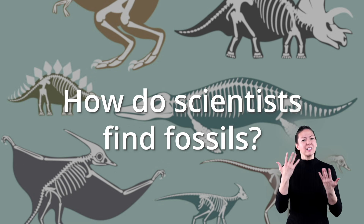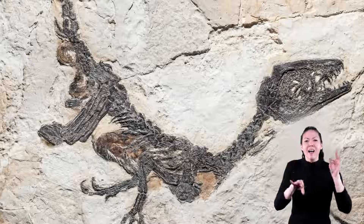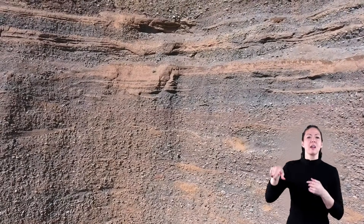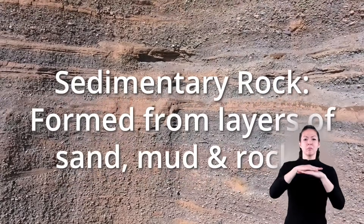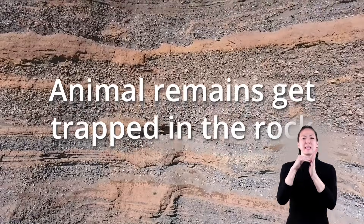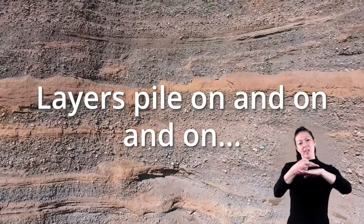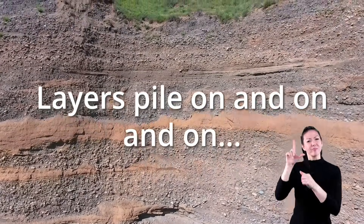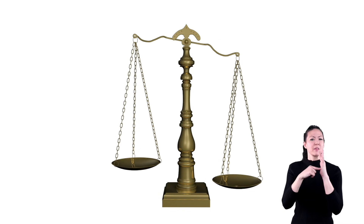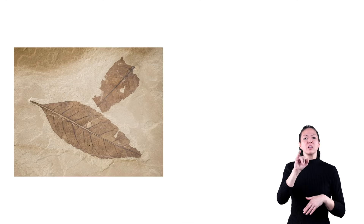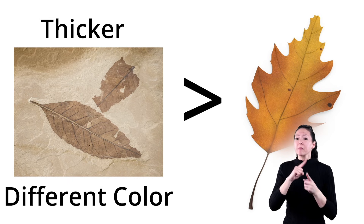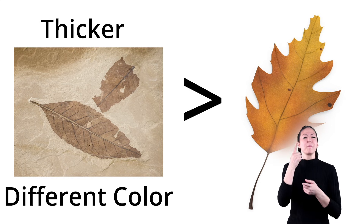So now that you know what fossils are, how do scientists go about finding them? Fossils come in many different colors and take many different forms, depending on where they're found. Most fossils are found in sedimentary rock layers. Sedimentary rock is a type of rock that is formed from layers of sediment, like sand and mud, along with small pieces of larger rock. Over millions of years, remains of animals can get trapped in these layers of rock, and more and more layers pile on top, thus preserving them forever. When a fossil is formed, it becomes heavier than the original organism from which it came — for example, because it's now made from mineral and rock material, a fossil of a leaf will weigh much more than the original leaf itself. While it may have the same shape of the leaf, it can actually be much thicker or be a different color than the original leaf, because hardened minerals have taken the place of the organic material.